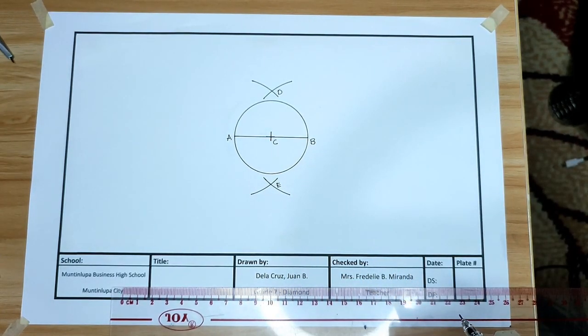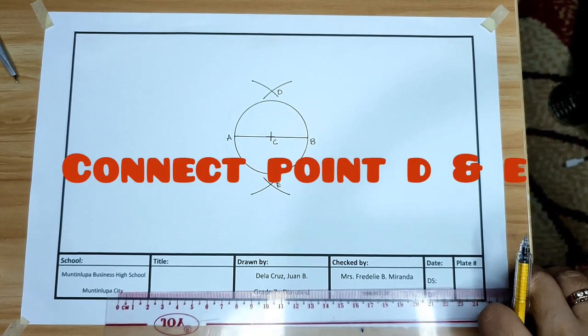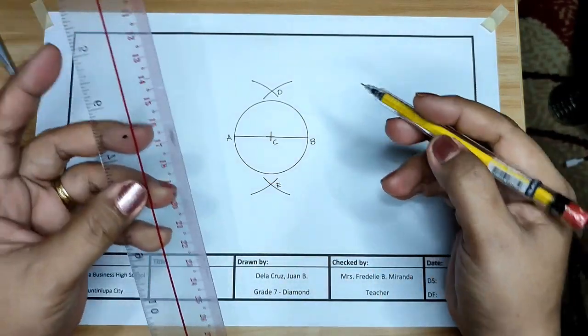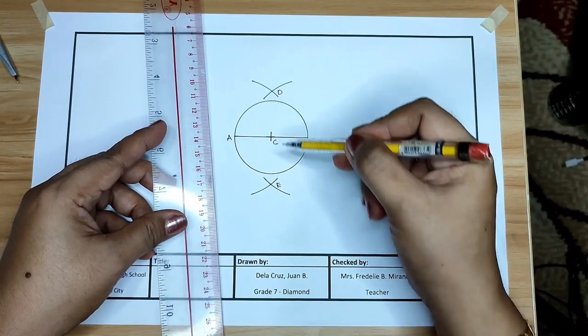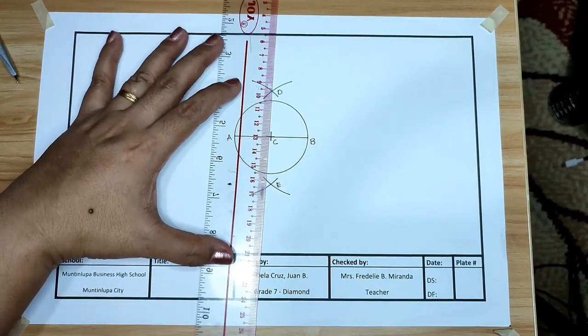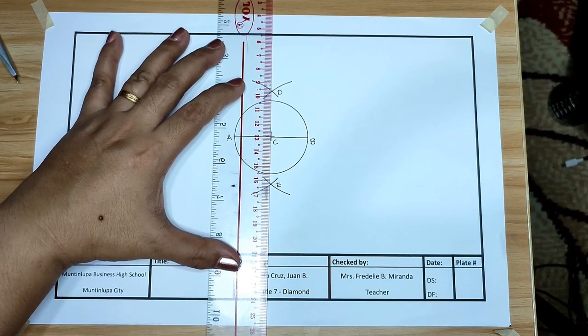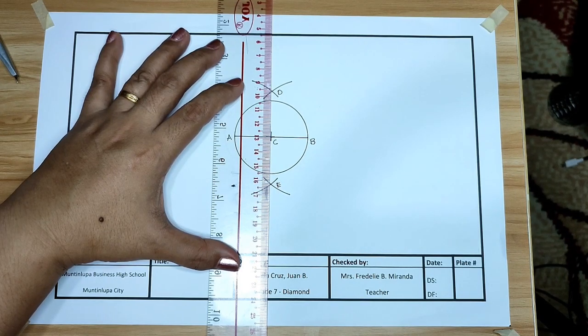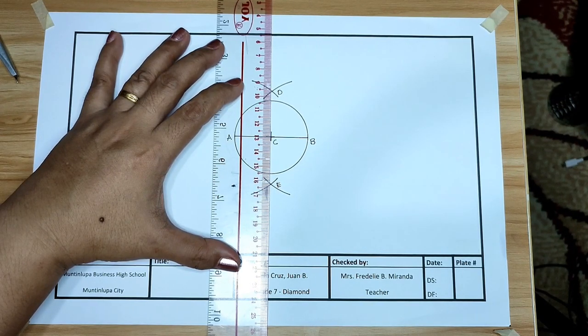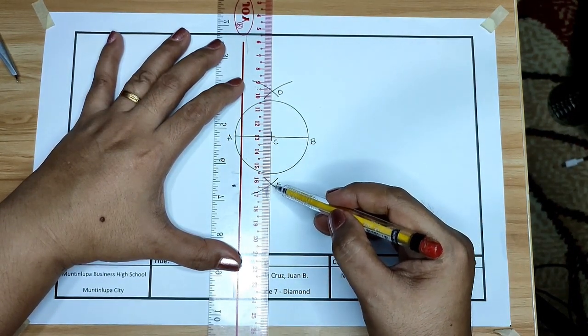Connect point D and E to bisect the circle. Using your foot rule, connect point D and point E. Let us try. And it should pass on the center or point C. Point D, pass through the center to E.